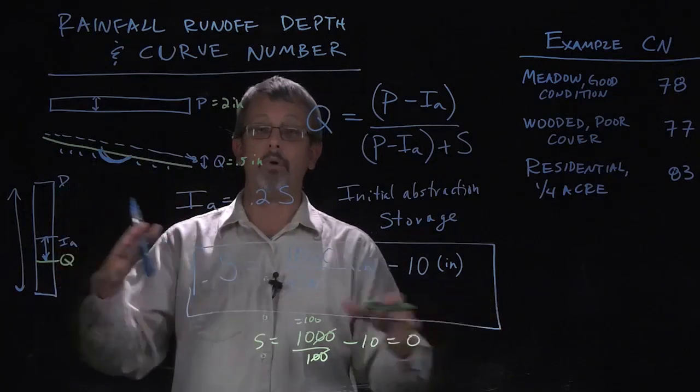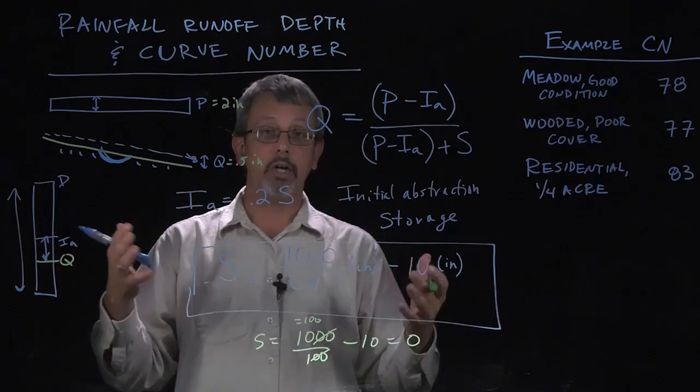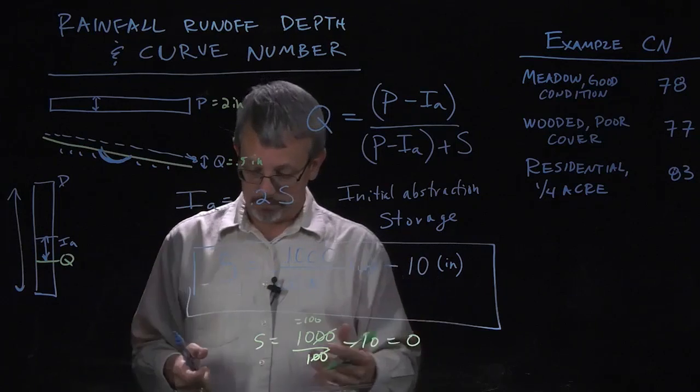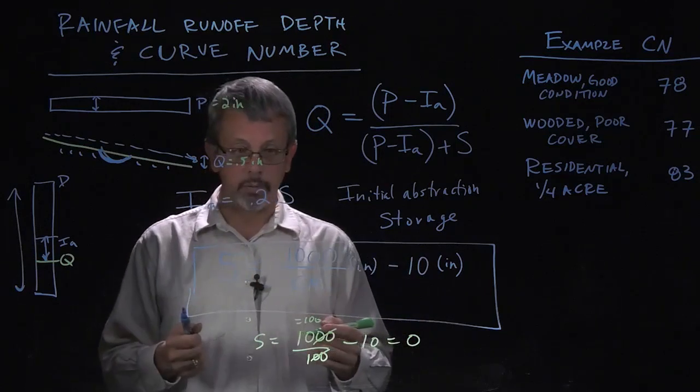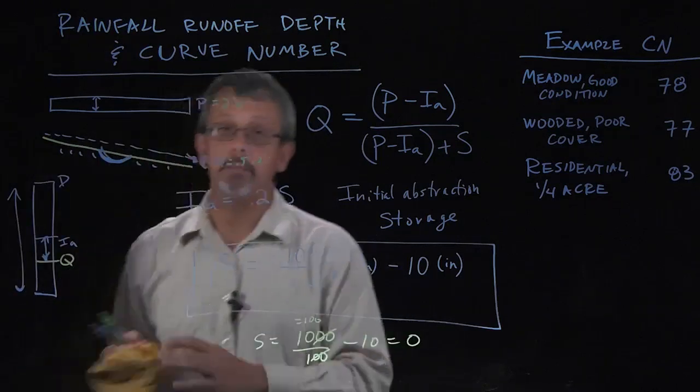If you just had a large plastic tarp or a large metal roof, it might have a curve number of very close to 100. As you get a lower curve number, then you're going to get more storage.